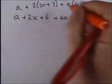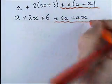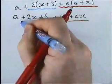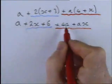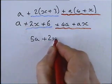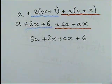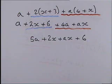The expansion gives 2x + 6 plus 4a + ax. Combining like terms: the a and 4a make 5a. So the answer is 5a + 2x + ax + 6. Note that ax and 2x can't be added together. That's the harder combined type 1 and type 2, but the same idea works — you can combine four or five of them this way.